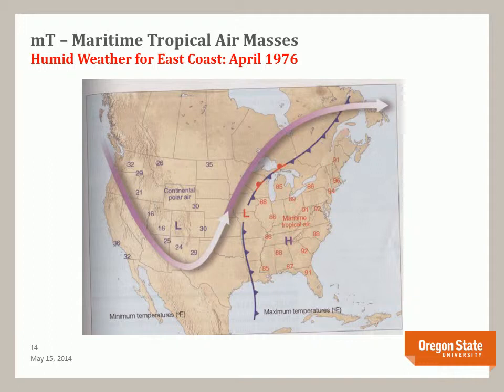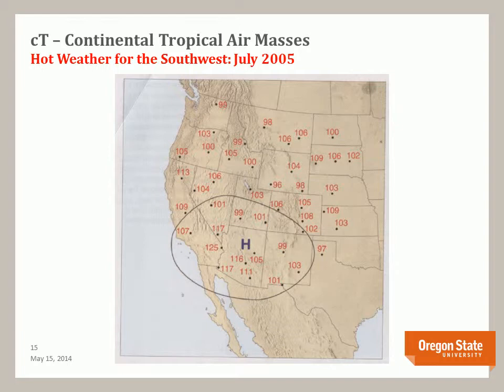Note the boundary between the air masses is the location of a frontal system with a prominent low pressure area. Finally, this slide shows a weather map for a continental tropical air mass in July of 2005 that resulted in very hot conditions in the desert southwest. Because it was a high pressure system, this system did not bring any moisture, resulting in very hot and dry conditions.